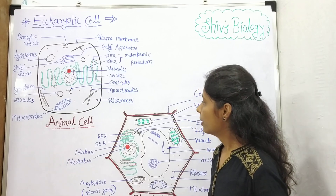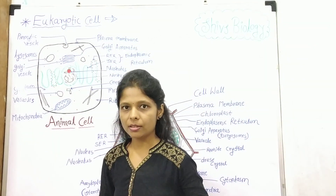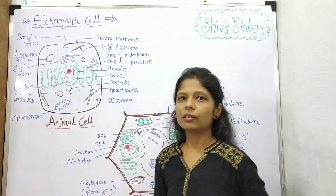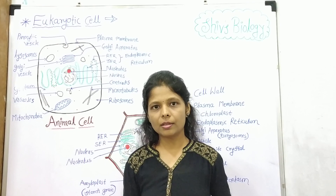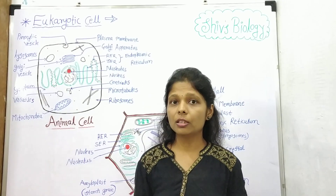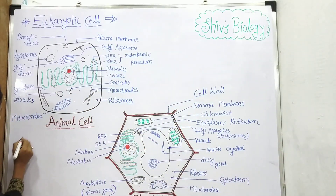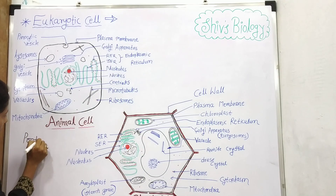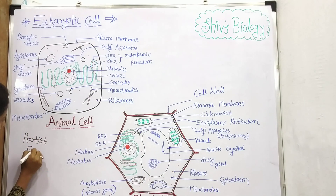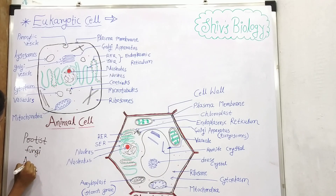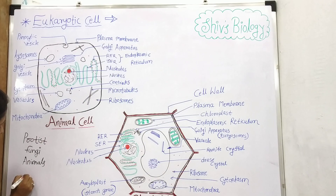In eukaryotic cells there are multicellular organisms in which these eukaryotic cells are present, like the protists, then fungi, animals, and plants.